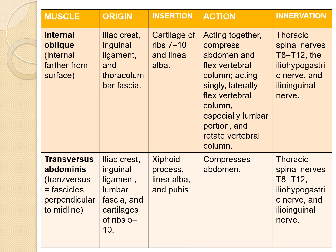The next muscle is internal oblique. Origin: iliac crest, inguinal ligament and thoracolumbar fascia. Insertion: cartilage of ribs 7 to 10 and linea alba. Actions: acting together, they compress the abdomen and flex the vertebral column; acting singly, they laterally flex the vertebral column, especially the lumbar portion, and rotate the vertebral column — both external and internal oblique perform these actions together. Innervation: thoracic spinal nerves T8 to T12, the iliohypogastric nerve and the ilioinguinal nerve.